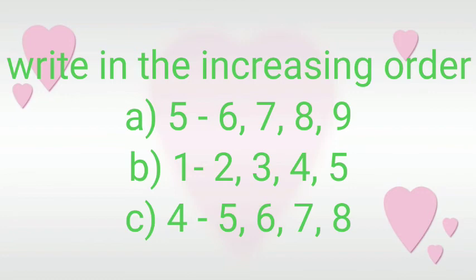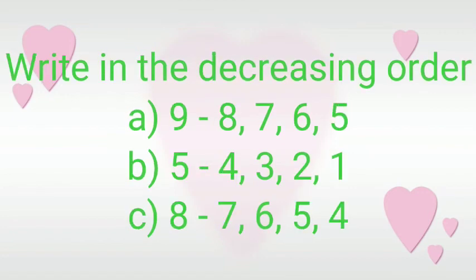Next one is write in the decreasing order. A number 9, before 9, 8, 7, 6, 5. B number 5, before 5, 4, then 3, then 2, then 1. And last one 8, before 8 what will come? 7, before 7, 6, 6 before 5, and 5 before 4. It is in decreasing order.